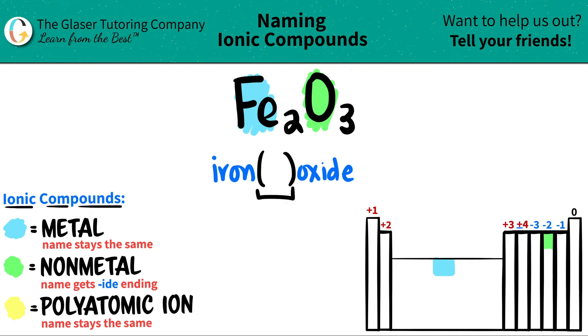And remember, the Roman numeral is always the charge of the metal, but that's pretty easy to find out. All we're going to do is we're just going to crisscross the subscripts to find out the charges.